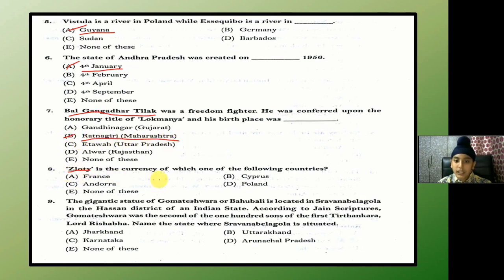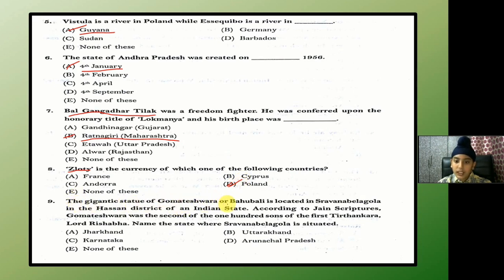Zloty is the currency of which one of the following countries? The answer is D — Poland. The gigantic statue of Gomateshwara or Bahubali is located in Shravanabelagola in the Hassan district of India.